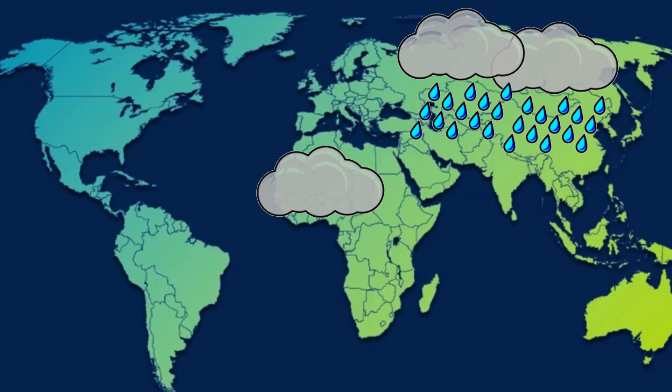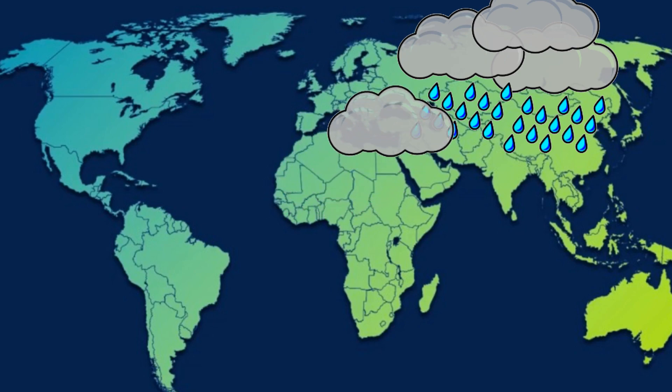Also, if one particular country produces artificial rain repeatedly, the clouds in nearby regions will accumulate in that particular region only, causing a shortage of clouds in other regions. So it is not a good idea to make artificial rain. Instead, if we save water and plant more trees, there is no need for artificial rain.